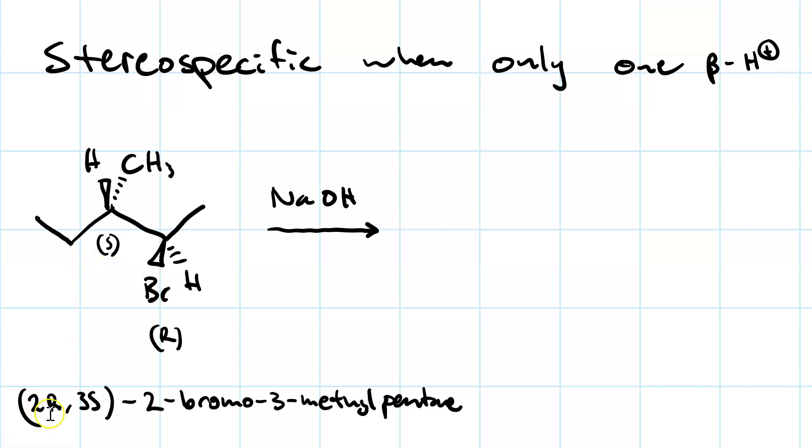Say we treat 2R,3S-2-bromo-3-methylpentane, this compound, with sodium hydroxide. The sodium hydroxide is a non-bulky base, which means that we're going to make the Zaitsev product. This is the beta proton we're going to take and our pi bond is going to form in between this beta carbon and the alpha carbon.